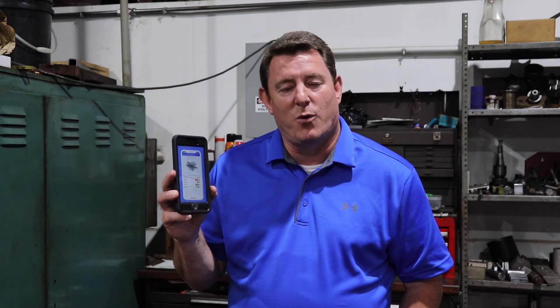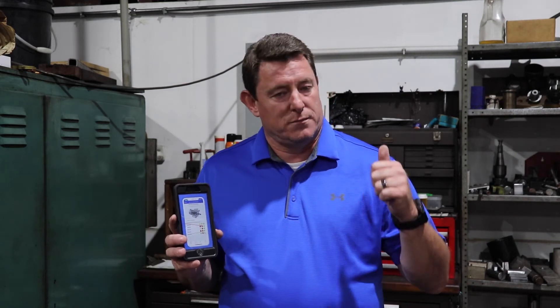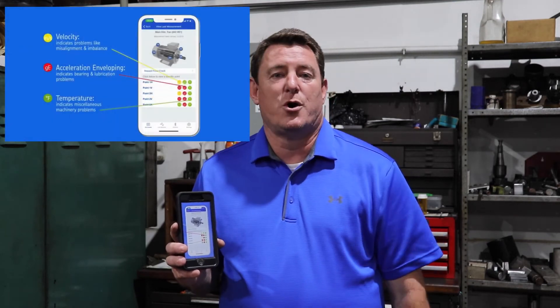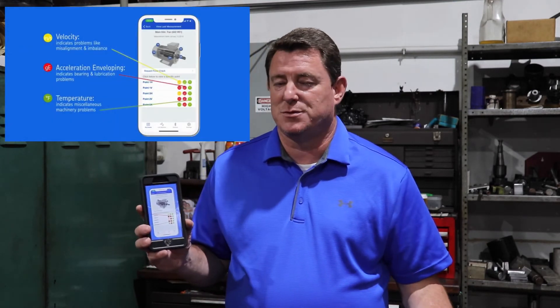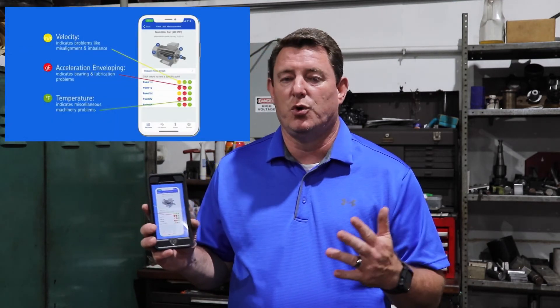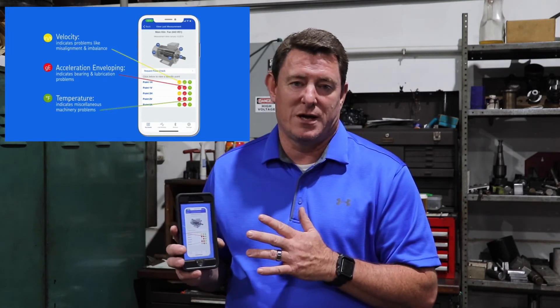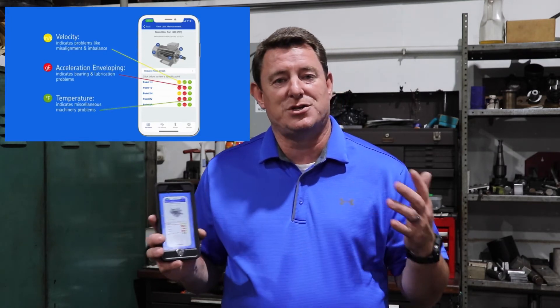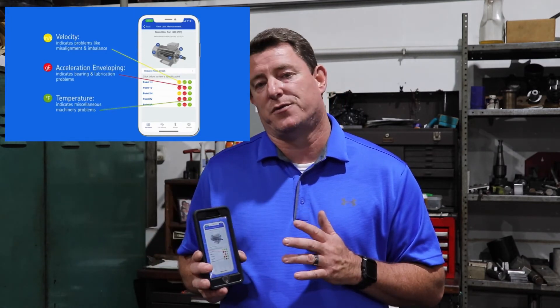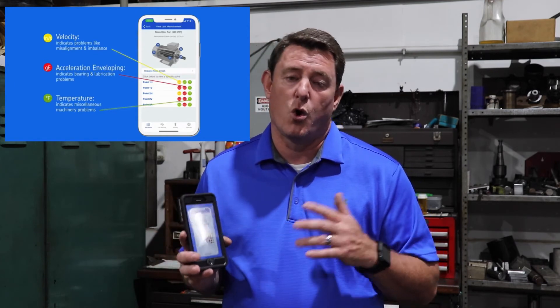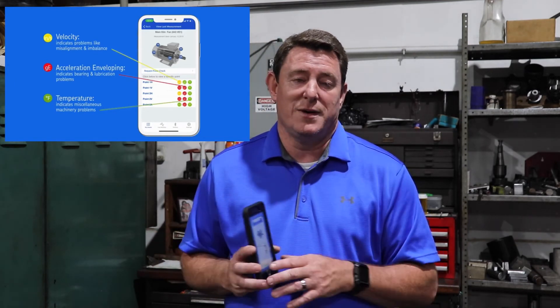This instant feedback on the app allows anyone in the building to make a quick decision about the motor. One, the motor is running okay — no action needs to be taken. Two, we need to monitor that motor because the vibration or the temperature is greater than it was a month ago. Or red means that we need to schedule a time for the motor to be replaced.